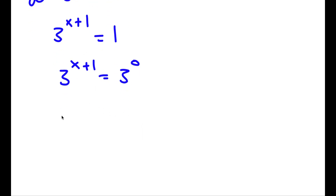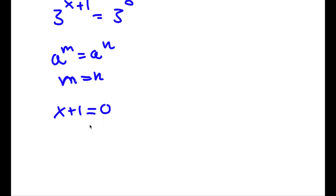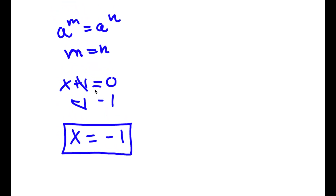If I have something in the form a^m equals a^n, this means that m equals n. So in this case, x plus 1 is equal to 0. Subtracting 1 from both sides, these cancel out and I'm left with x equals negative 1. So this is my answer.